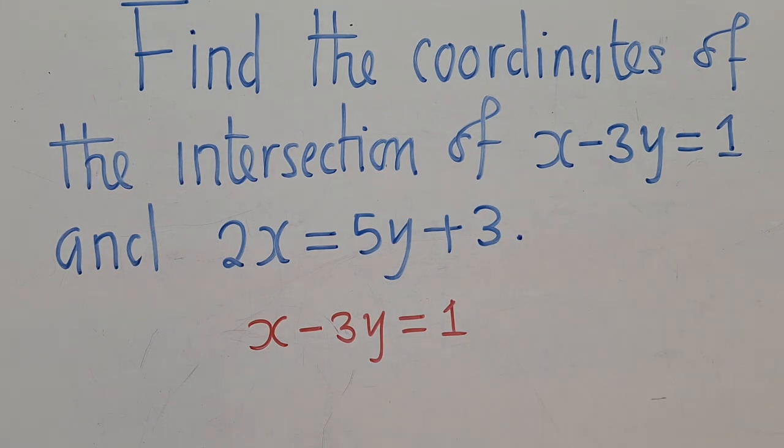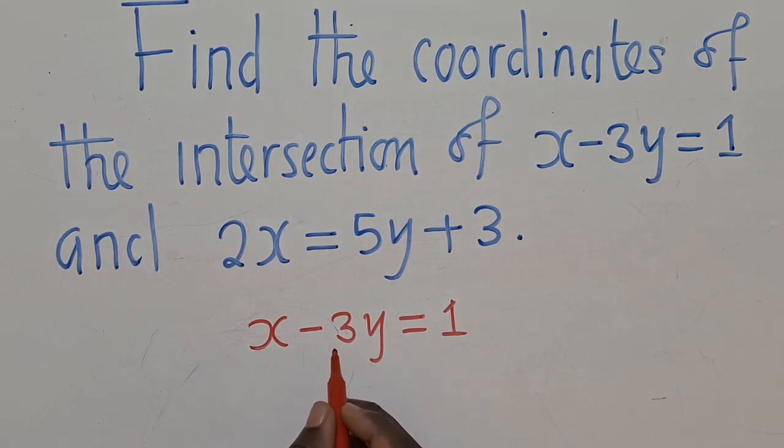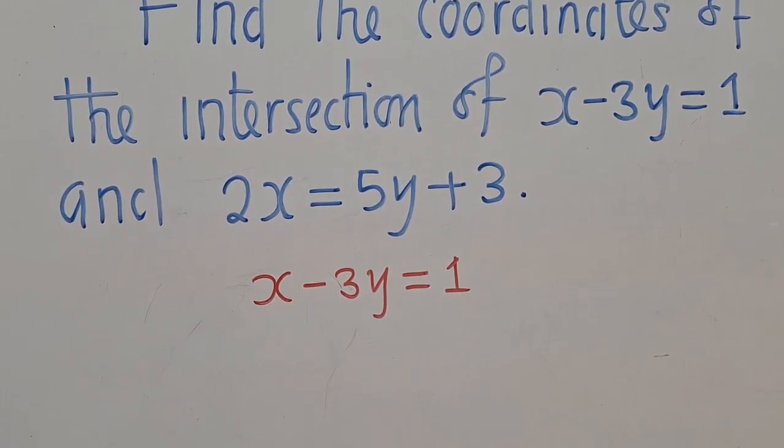So once I get this, I make one of the letters subject of the formula. Okay, so I'll go with x. If I want I can go with y. So I'll go with x, meaning I have to make sure that x is alone.